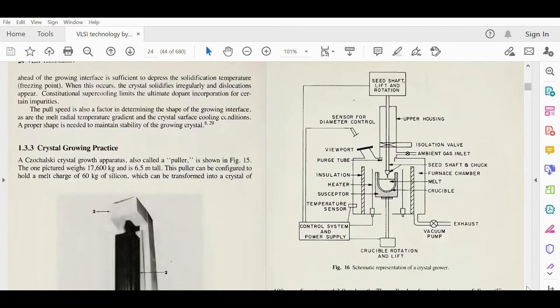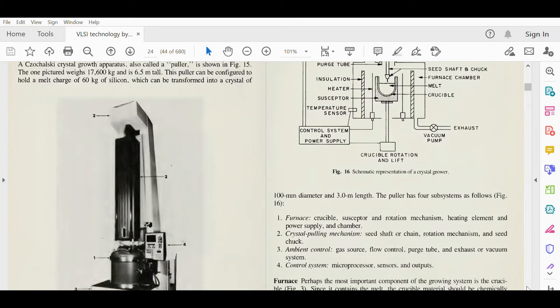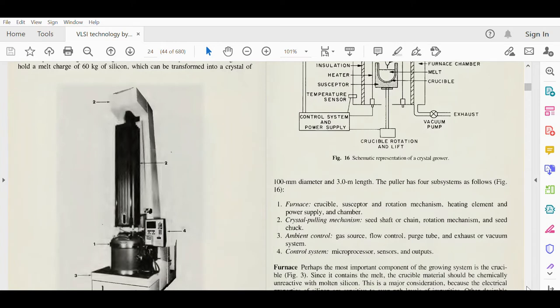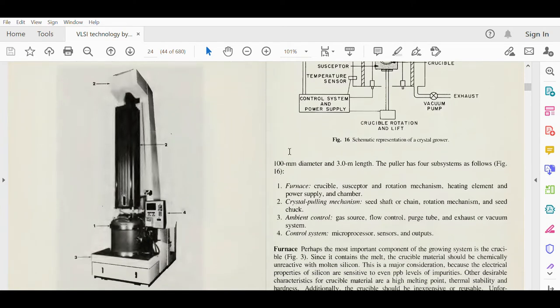We can produce 60 kg of silicon using this apparatus and it can be transformed to 100 millimeter diameter and 3.0 meter length. That 60 kg of silicon can be transformed to 100 millimeter diameter and 3 meter length.